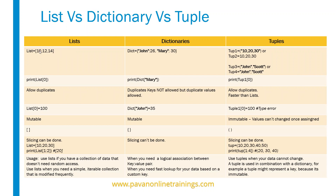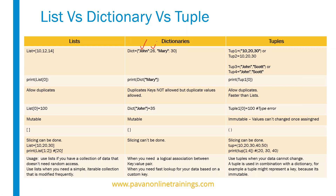Now let's get started — list versus dictionary versus tuple. If you want to create a list, we have to use square brackets: list_variable equal to a few values. If you want to create a dictionary, we have to use curly braces: dictionary_variable equal to key-value pairs. The values are stored as key and corresponding value, then second key and corresponding value. This is the dictionary creation.